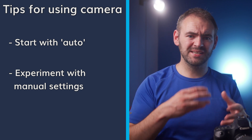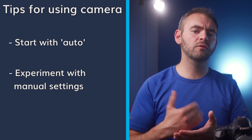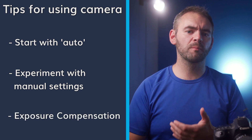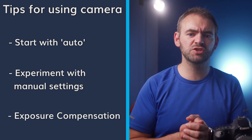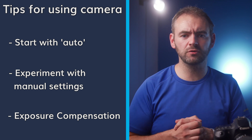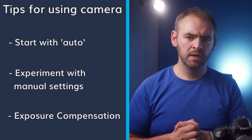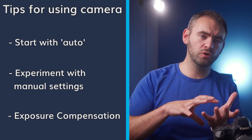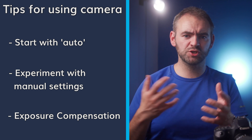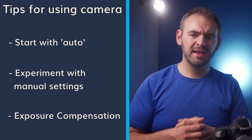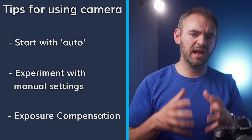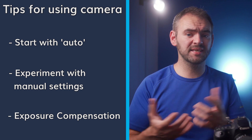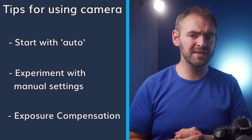Now if you're using a semi-automatic mode, you can also use something called exposure compensation, which is sometimes marked as EV comp on your camera. This will allow you to force the camera to under or over expose your image to a certain amount, in the event that the camera's idea of how bright the image should be is different than what you want.